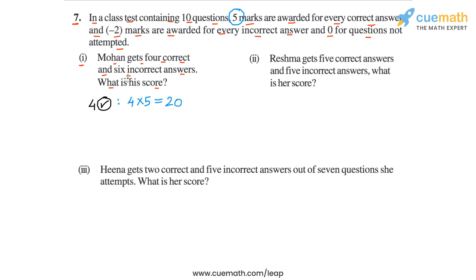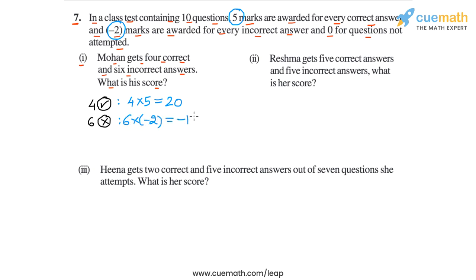Then Mohan got 6 incorrect answers. For the 6 incorrect answers, as given in the problem statement, Mohan will get 6 into minus 2, or minus 12 marks.